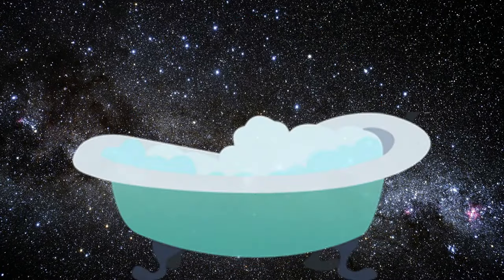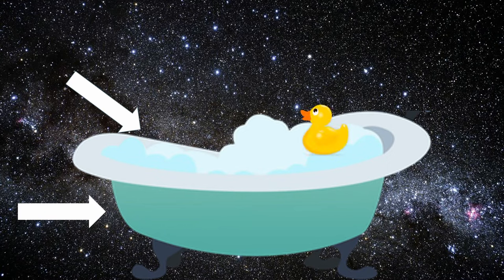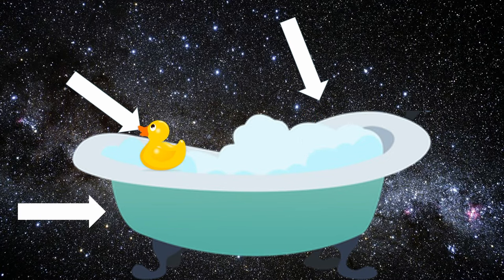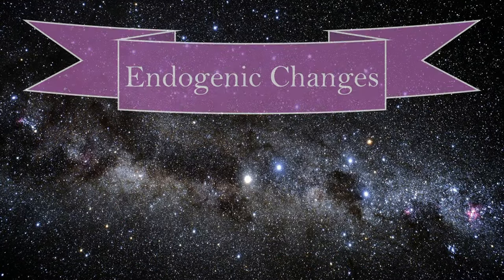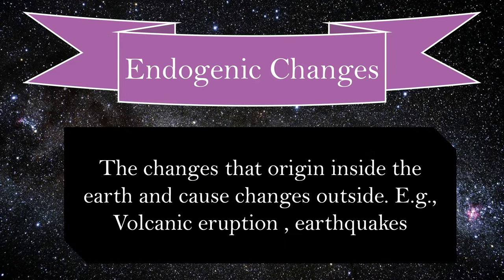This situation can be compared to a bathtub, wherein the bathtub is the Earth, the water is the molten magma, and a rubber ducky can be seen as the lithospheric plates which move because of the flow of water. This movement of lithospheric plates causes various changes called endogenic changes.